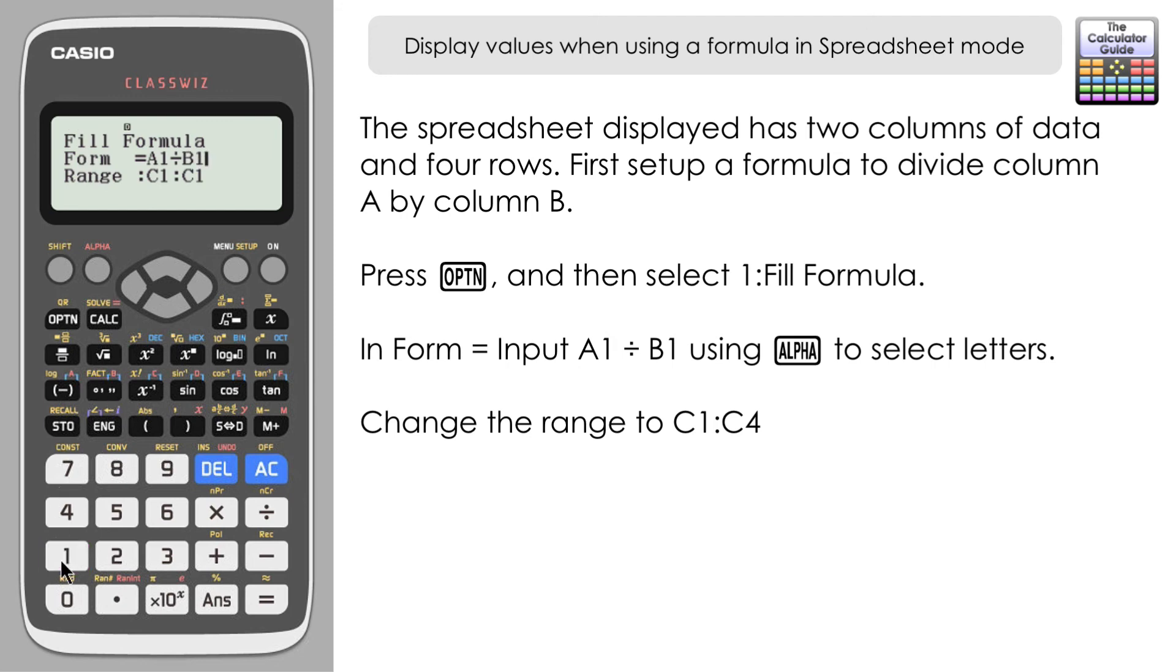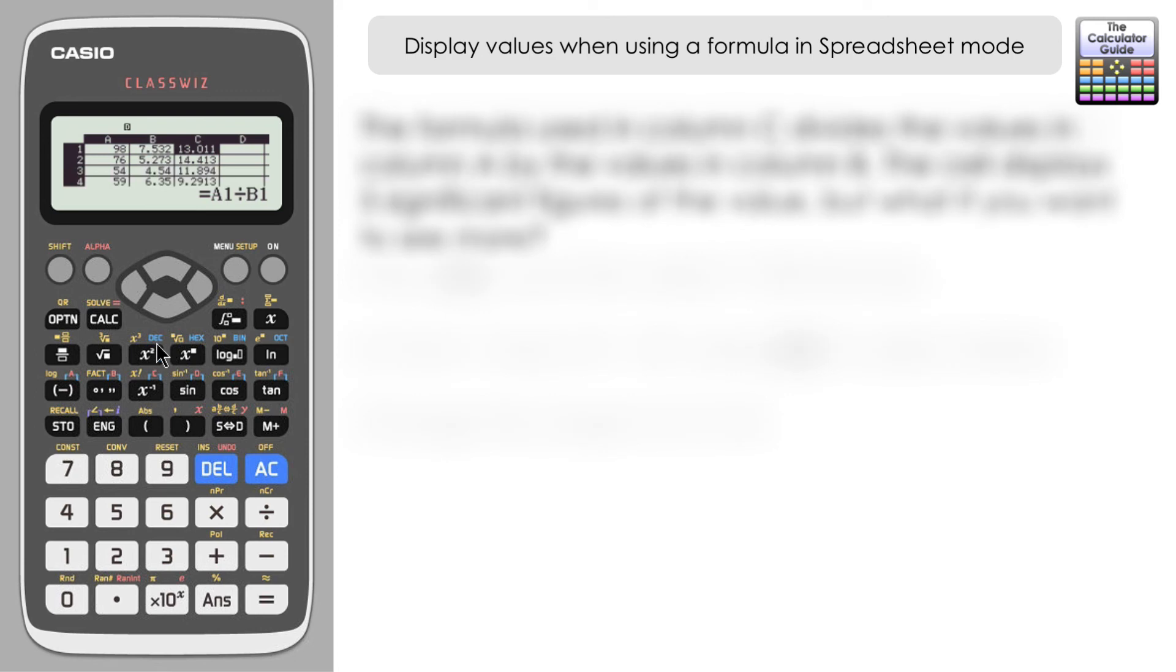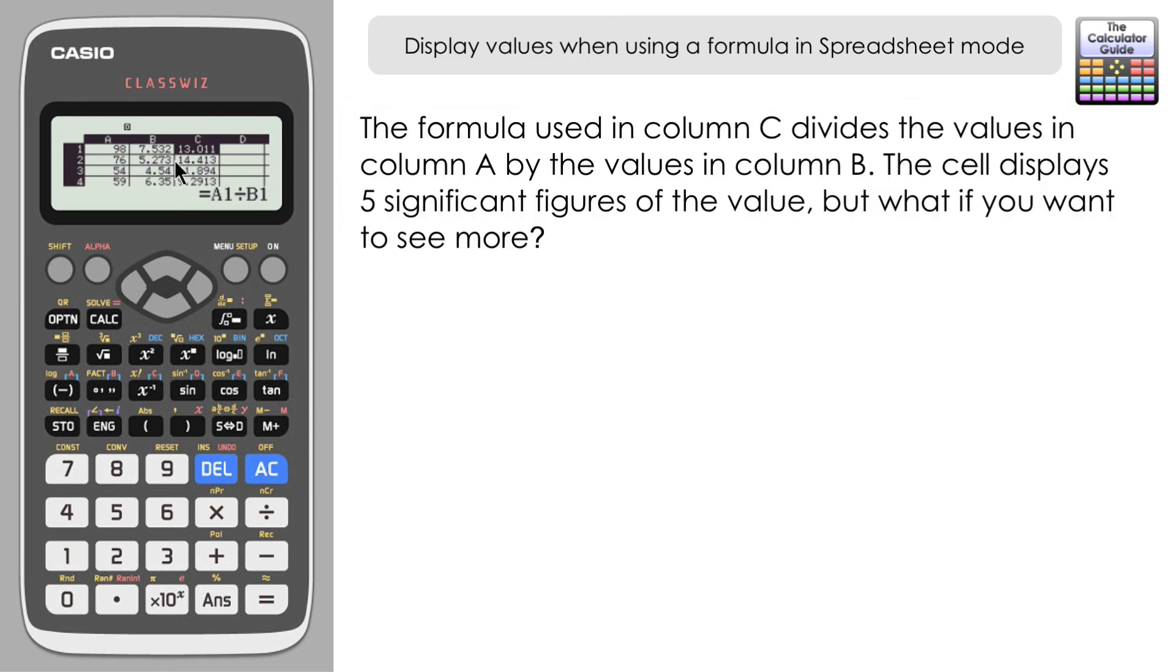In range I want this to apply to all four rows which I have data in, so I want them inputted in from cell C1 to cell C4. So I'm just going to change the end one to C4, press equals, and here I have my results.